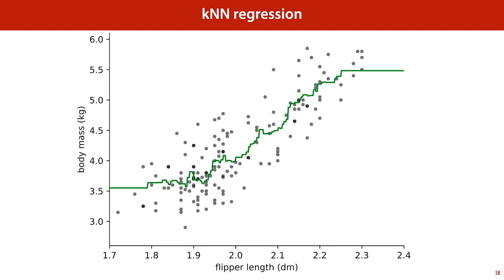For completeness, here is what the regression equivalent of the KNN classifier looks like: KNN regression. Its prediction for any given point is simply the average of the K nearest points in the data — in this case, K is set to 7. This hopefully gives you some idea of the different ways there are to build a regression model. In the next lecture, we'll look in detail at how linear regression is done, and in later lectures we'll start looking at different non-linear methods as well.